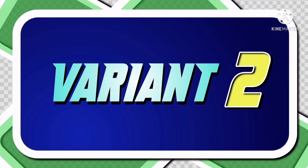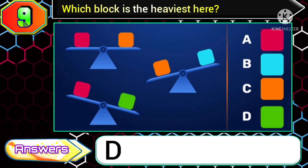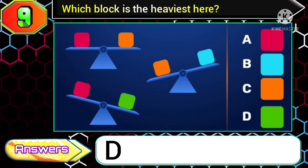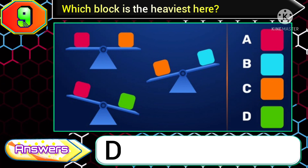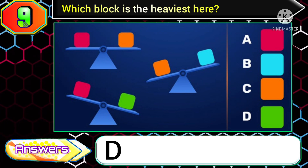Now, in variant 2 of this question, the green block is now in option D. So you need to choose option D for this type of image.